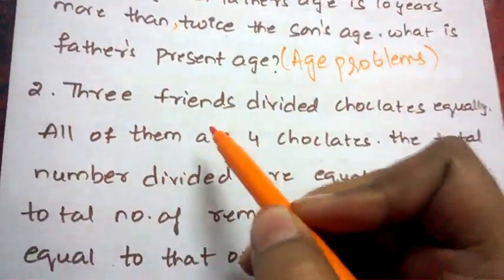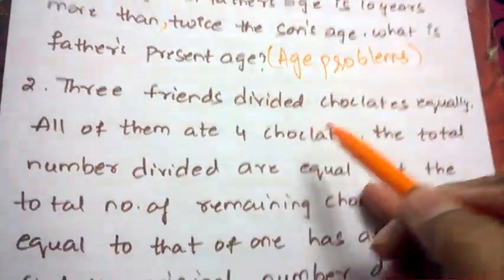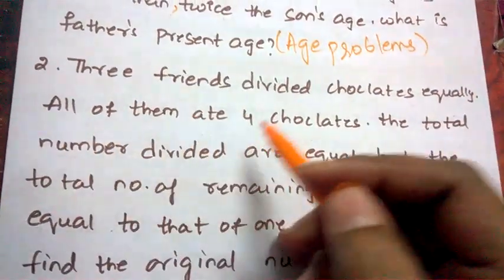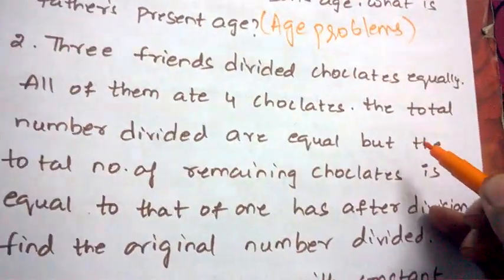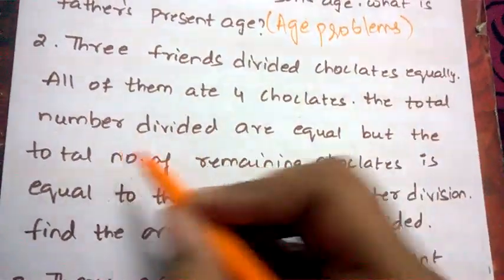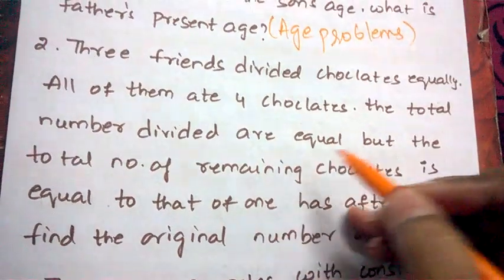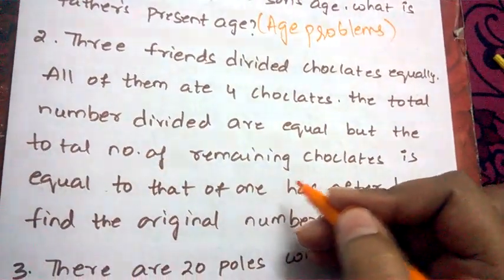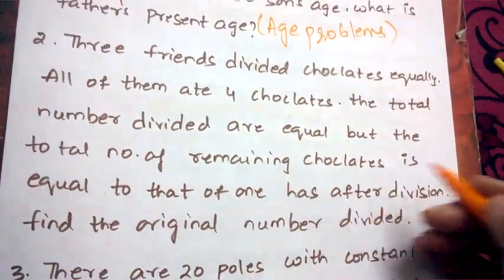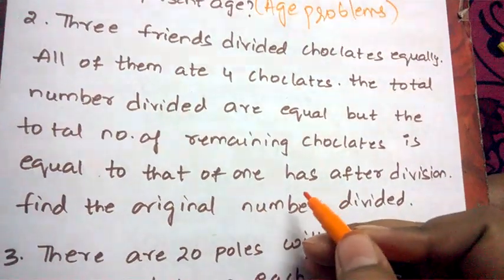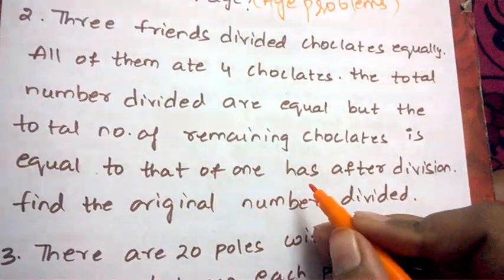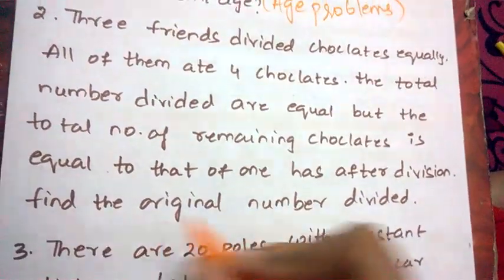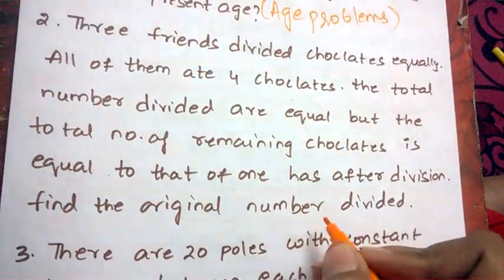Next question: Three friends divided chocolates equally. All of them ate four chocolates. The total number divided are equal, but the total number of remaining chocolates is equal to that of what one person has after division. Find the original number divided.